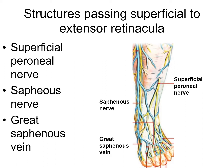Structures passing superficial to extensor retinaculum are superficial peroneal nerve, saphenous nerve and great saphenous vein.